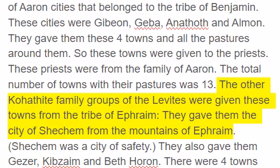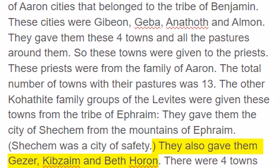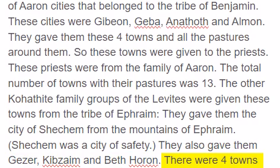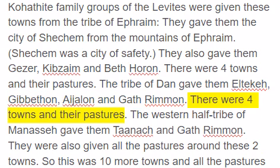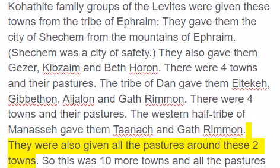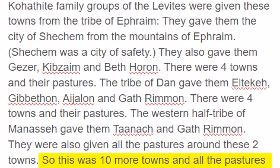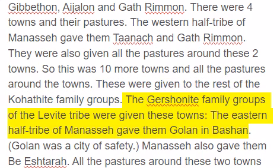The other Kohathite family groups of the Levites were given towns from the tribe of Ephraim. They gave them the city of Shechem from the mountains of Ephraim. Shechem was a city of safety. They also gave them Gezer, Kibzaim and Bethharan. There were four towns and their pastures. The tribe of Dan gave them Eltekeh, Jibethon, Ijelan and Gathruman. There were four towns and their pastures. The western half-tribe of Manasseh gave them Tonach and Gathruman, and all the pastures around these two towns. So this was ten more towns and all the pastures around the towns. These were given to the rest of the Kohathite family groups.